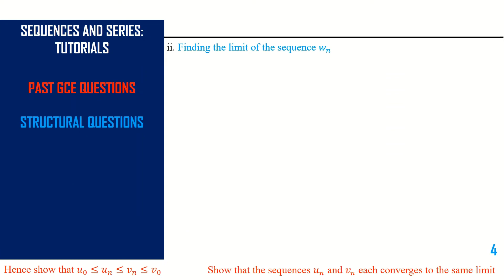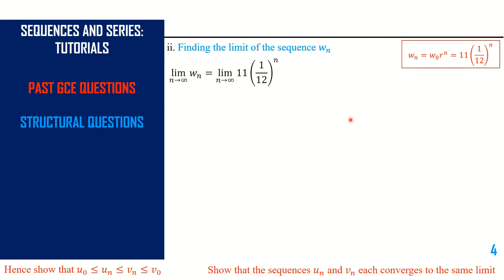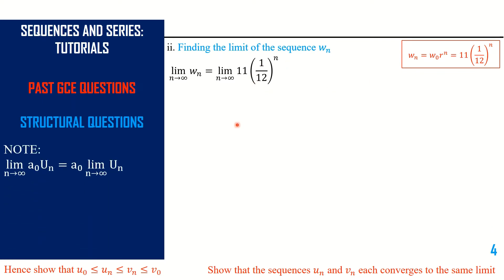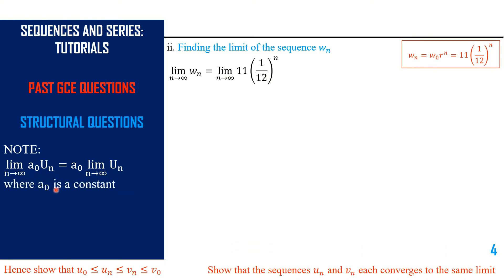Roman II is asking us to find the limit of the sequence w(n). Our w(n), as expressed in the previous slide, is 11 × (1/12)^n. So the limit of w(n) is just the limit of 11 × (1/12)^n. The limit as n tends to infinity of a₀ × u(n) is equal to a₀ times the limit as n tends to infinity of u(n), where a₀ is a constant — because the constant does not depend on n.